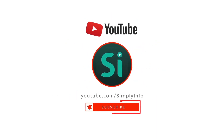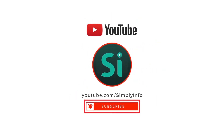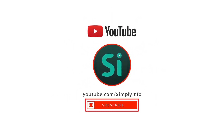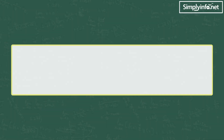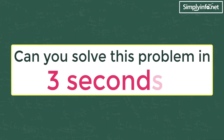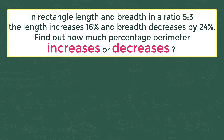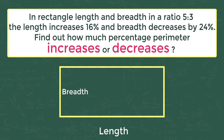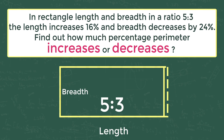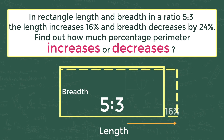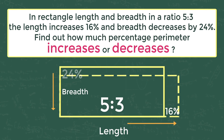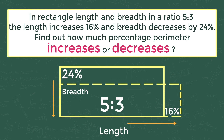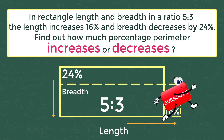Please subscribe for more videos and click the bell icon for updates. Can you solve this problem in 3 seconds? In a rectangle, the length and breadth are in a ratio of 5 is to 3. The length increases by 16% and breadth decreases by 24%. Find out how much percentage the perimeter increases or decreases.